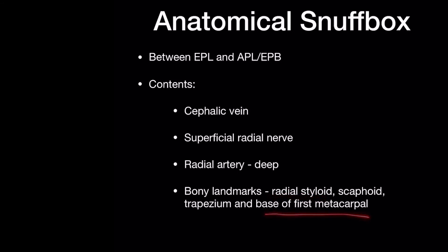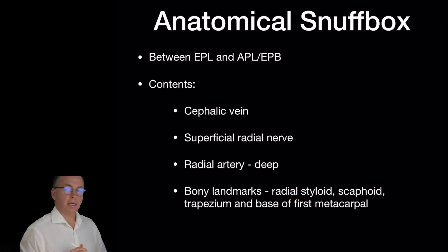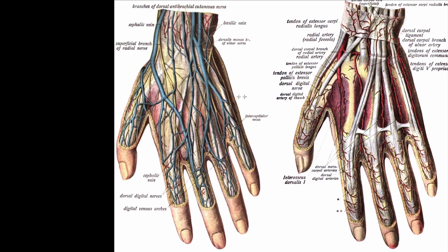The anatomical snuff box is a very busy area, and is examined commonly for a number of reasons in medicine. Here we see that represented again, the snuff box with overlying it the cephalic vein, superficial radial nerve, and deep down radial artery.